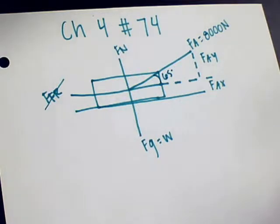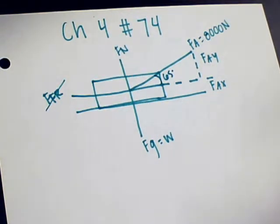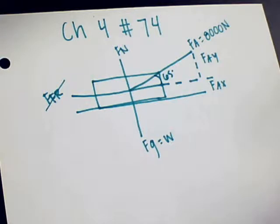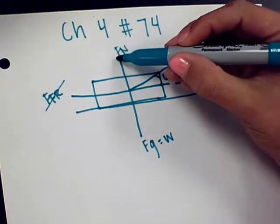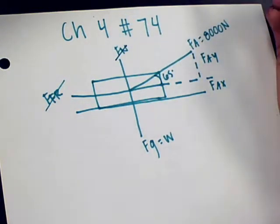The plane rises with a constant velocity in the vertical direction while continuing to accelerate in the horizontal direction. So we can assume that there's no acceleration in the Y direction, but it is accelerating in the X direction. And since the plane is already in the air, we can actually get rid of the normal force, because there's no force acting down on the plane.